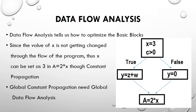Global constant propagation needs global data flow analysis. If a variable is declared globally and behaves like a constant — meaning its value is never changed throughout the program — we analyze which values remain constant across the program flow and replace them directly with the constant value.